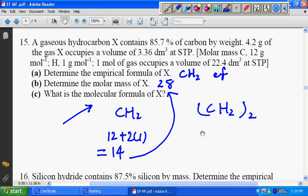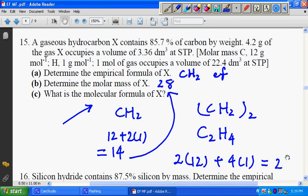So you get C2H4. If you don't believe, you can do the calculation: 2 times 12 plus 4 times 1, you will get 28.